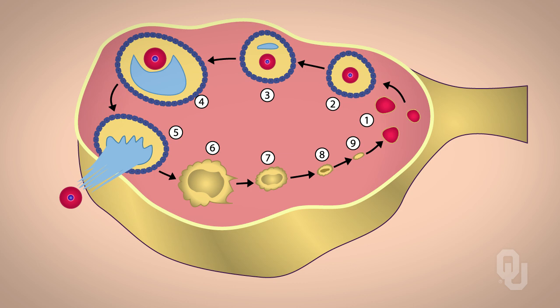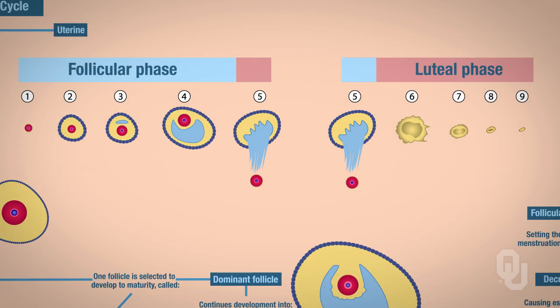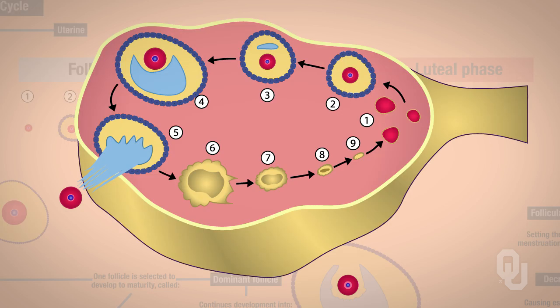Dealing with the ovarian cycle, we're working with the ovary and what's occurring in the ovary with the development of the ovum. The numbers on this diagram inside this ovary — one, two, three, four, and so on — correspond to the numbers on your next slide. When you look at this flowchart, those numbers correspond to the numbers you see here on this chart as well as the previous slide, so you can link this information together.